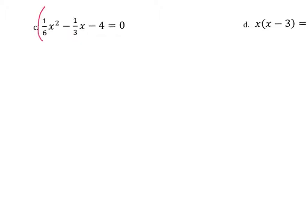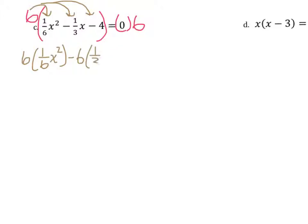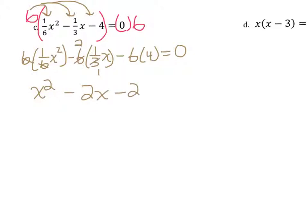When you do something to one side of an equation, you have to do it to the other. I distribute the 6 to each term: 6 times 1/6 x squared gives x squared; 6 times 1/3 gives 2, so I get minus 2x; and 6 times 4 gives minus 24. Zero times 6 is still 0. So I now have x squared minus 2x minus 24 equals 0. I went from having fractions — cleared them by multiplying by the least common denominator — and now I'm ready to factor and use the zero factor property.